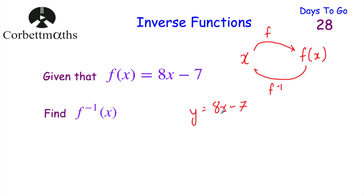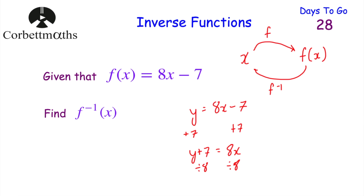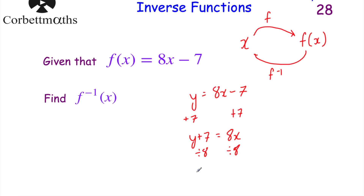At the minute y is the subject; I'm going to make x the subject. To get rid of the minus 7, I add 7 to both sides, giving y + 7 = 8x. Then I divide both sides by 8: (y + 7)/8 = x. So I've now made x the subject.